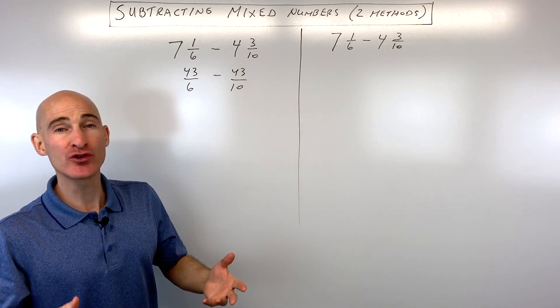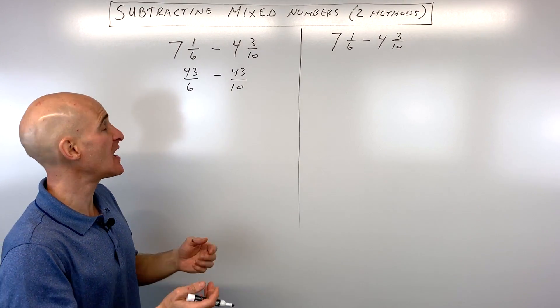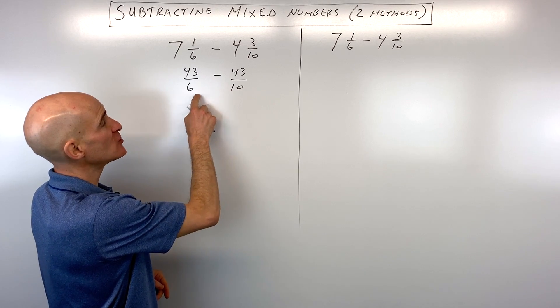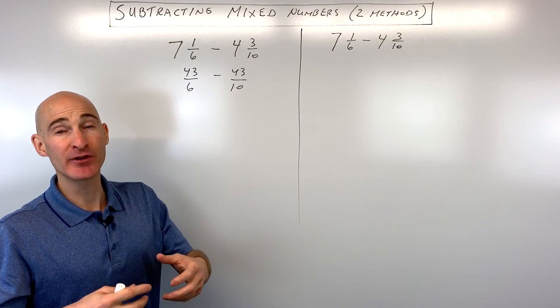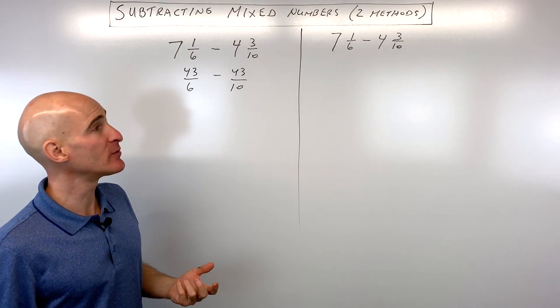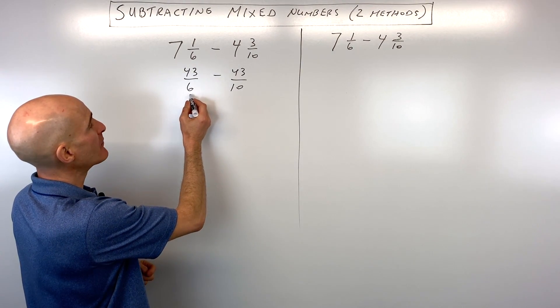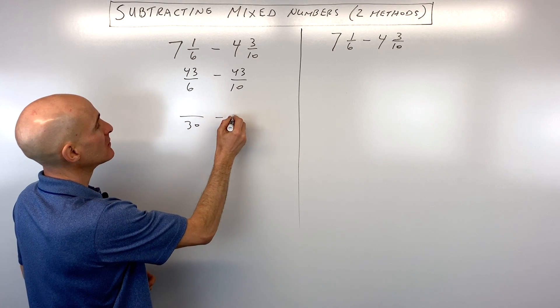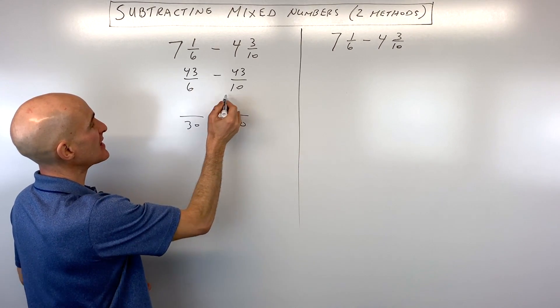Now, if you can't find that number or you're just not so concerned about finding that number, what you can do is you can just multiply these two numbers together and just make the common denominator 6 times 10, 60. And that's fine, too. But if you can find a smaller number, it's going to make it a little bit easier. So we decided our common denominator is going to be 30, because that's the smallest number 6 and 10 both go into.